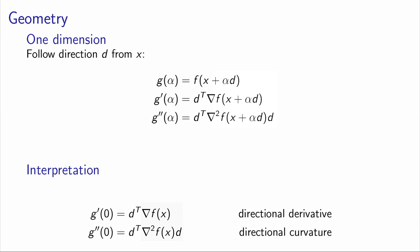The interpretation of these quantities is as follows. The derivative of g at zero — so alpha equals zero — is the directional derivative, right? It's d transpose times the gradient. That's what we've seen before.